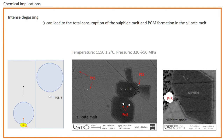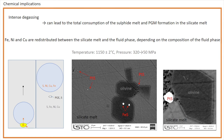For larger degassing, we observe total consumption of the sulfide melt in the experimental samples, leading to the formation of PGMs in the silicate melt. In this decompressed sample, sulfide melt inclusions in olivine crystals, mainly consisting of FeS, indicate the occurrence of a sulfide melt before decompression. Whereas in the silicate melt, or at the silicate melt-olivine interface, we only observe PGM nuggets. Iron, nickel and copper are redistributed between the silicate melt and the fluid phase, most likely depending on the composition of the fluid phase. Nickel and copper possibly prefer the fluid phase, whereas iron preferentially incorporates the silicate melt and can eventually boost chromite or magnetite crystallization, depending on the availability of chromium.